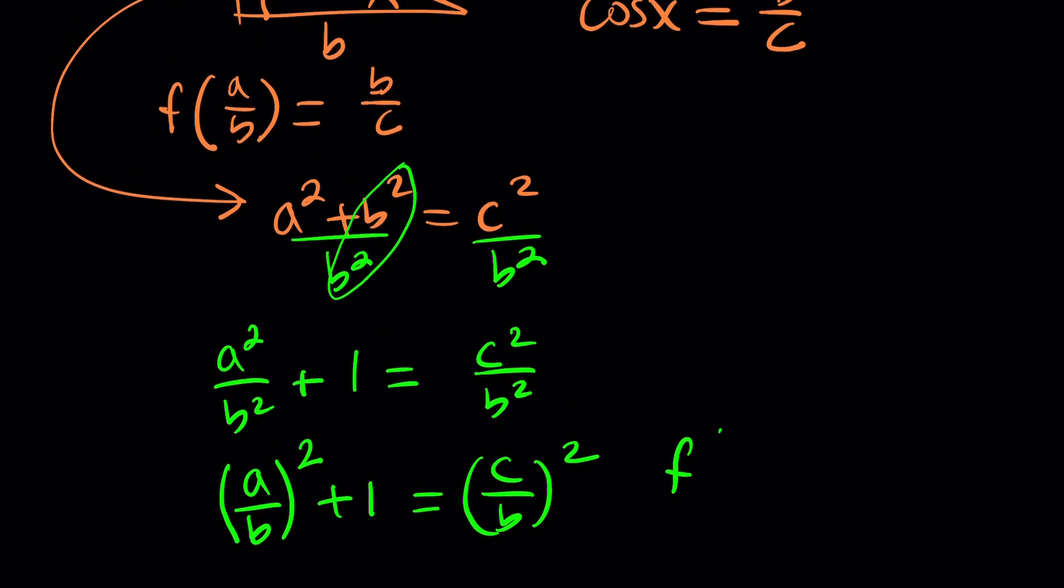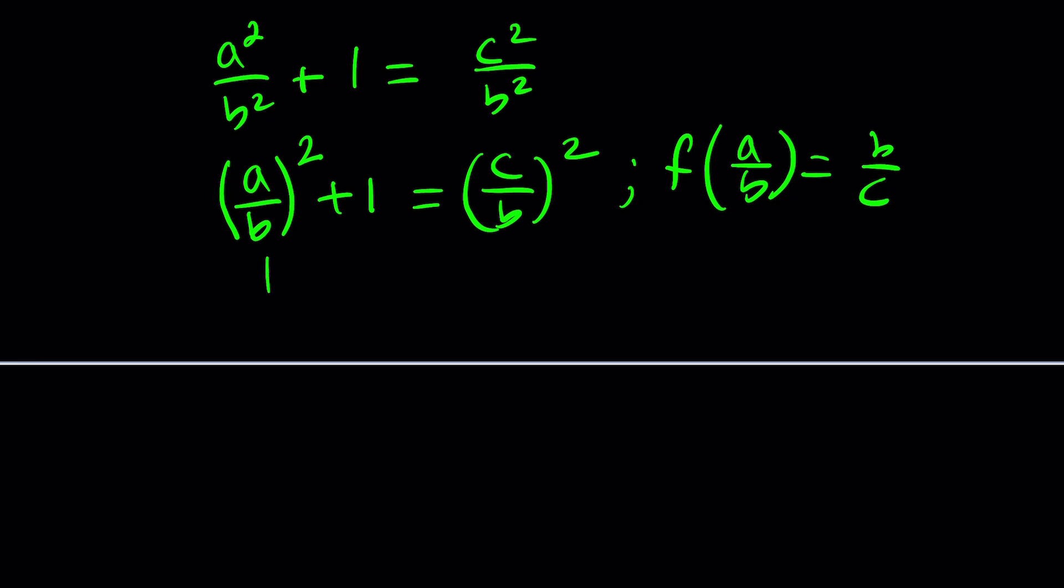We have f of a over b equals b over c. And we have a over b, and we almost have b over c. Almost meaning it's the reciprocal. But we can easily flip it. That can be done with functions. In other words, f can take this and turn it into the reciprocal of this, with some square rooting and flipping and so on and so forth. But that's the general idea. But let me tell you something else.